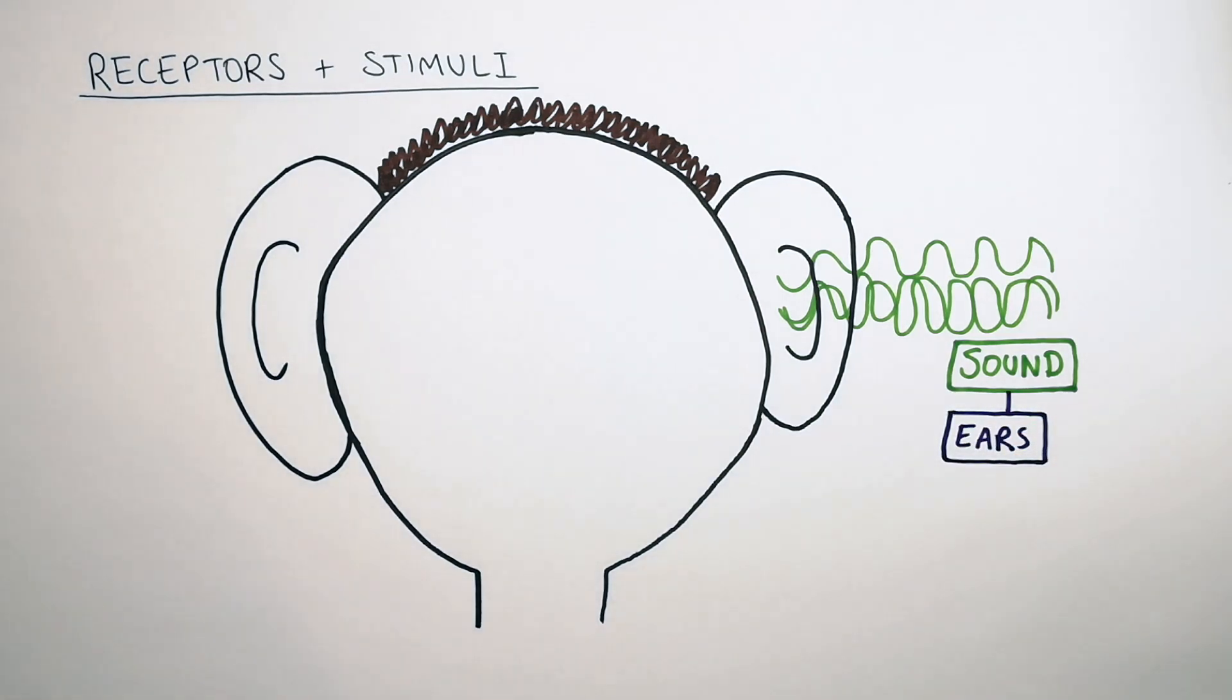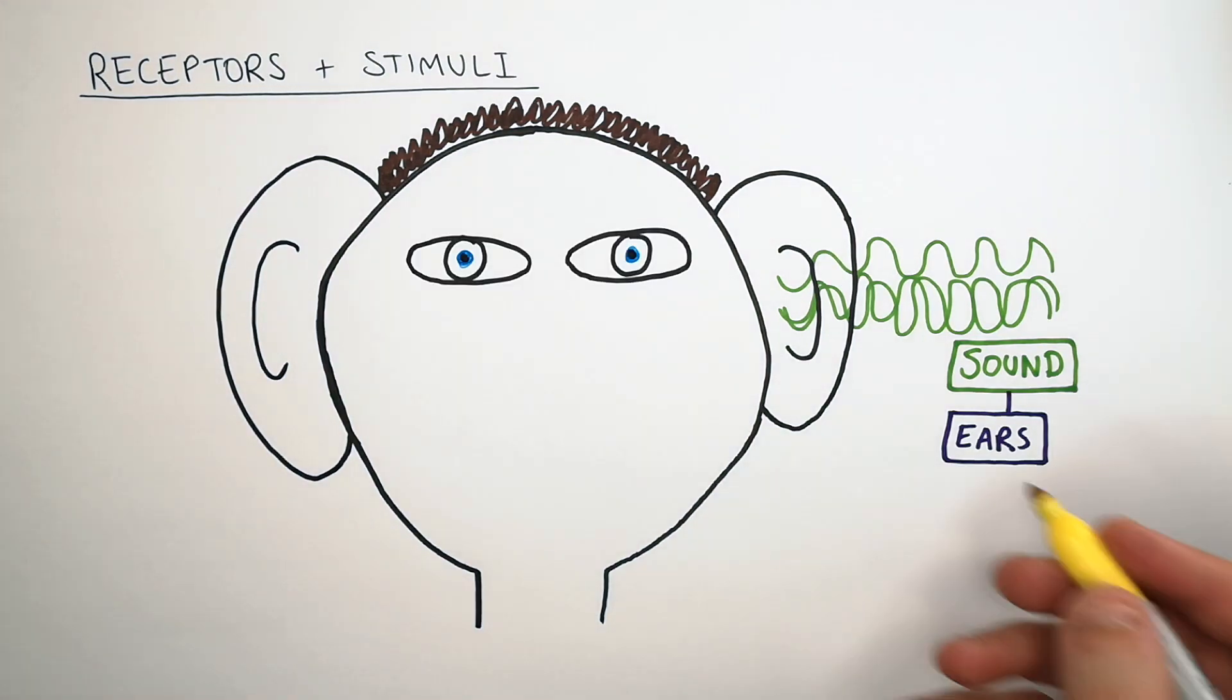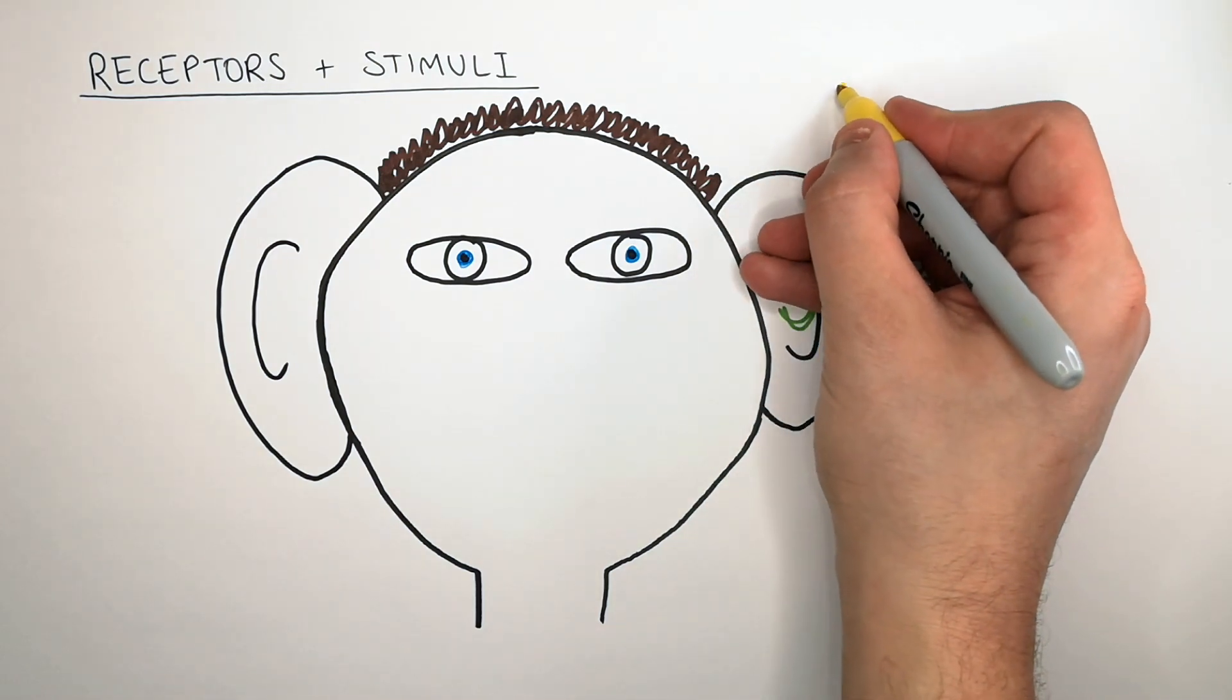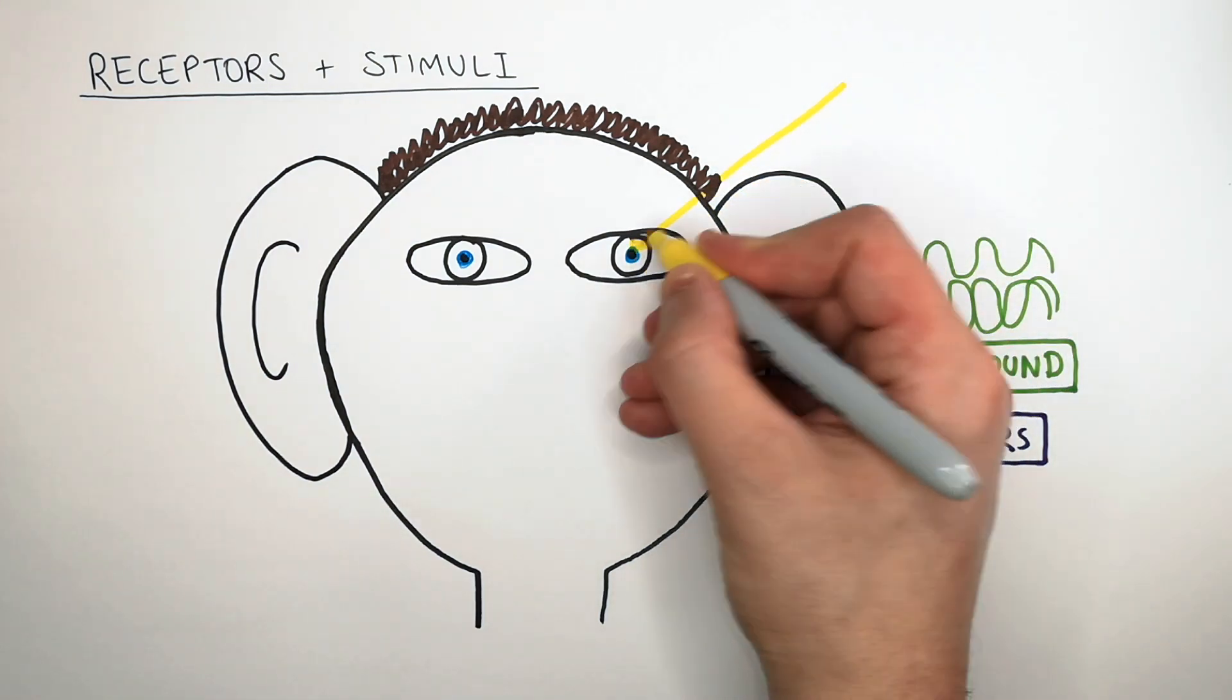The next receptor we're going to talk about are the eyes. Eyes detect light. Eyes do not detect objects. What eyes detect is the light reflecting off the objects.